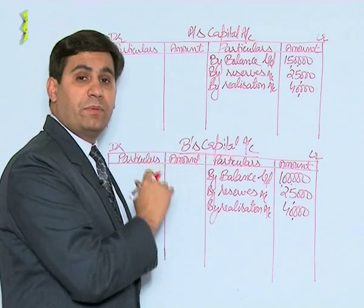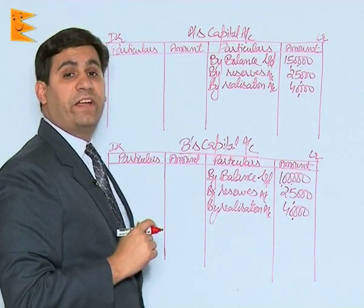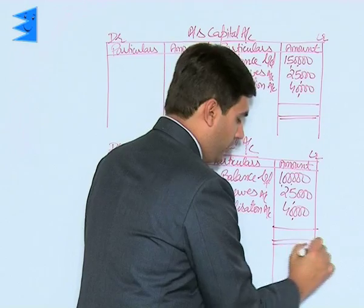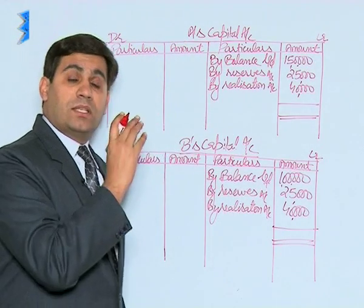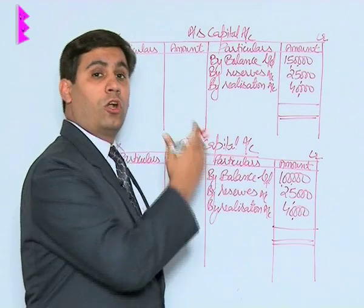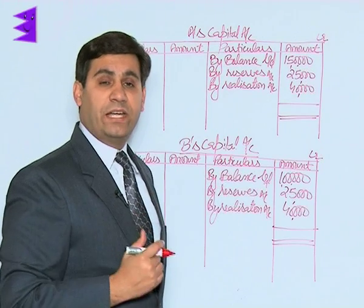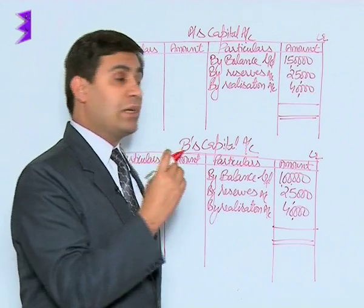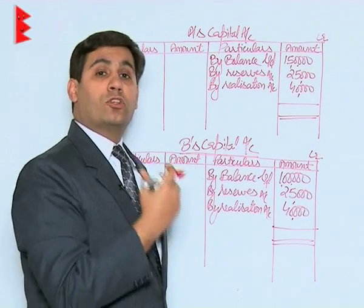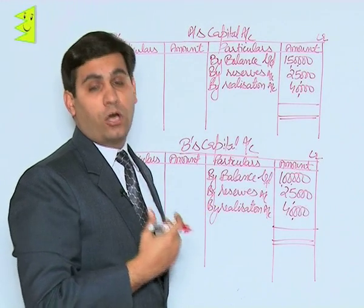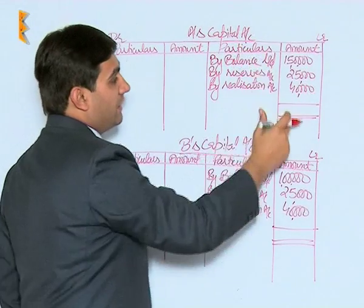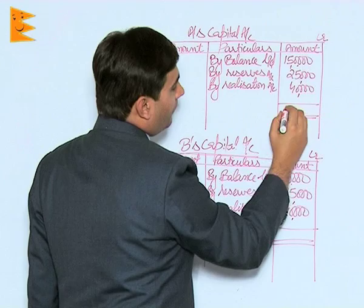Now all entries have been posted. We total the capital accounts to find the amounts payable to each partner at dissolution. Since this is a dissolution, the closing balance cannot be called 'balance carried down' — because after this date the business will cease to exist. The net payable amount for A comes to ₹2,15,000.